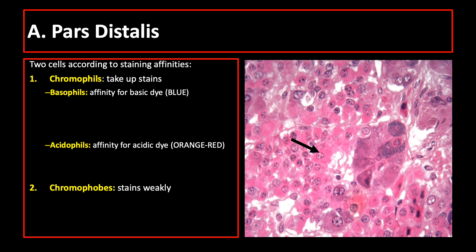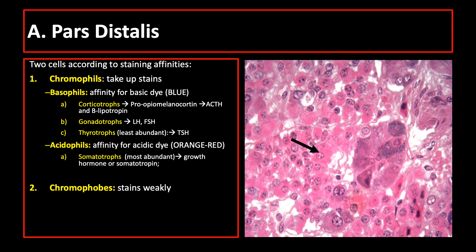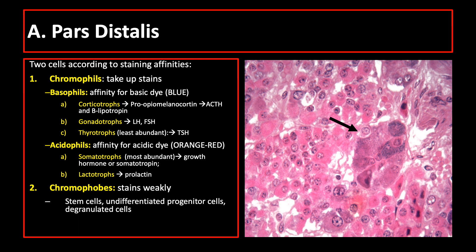Basophilic cells include corticotropes, which produce adrenocorticotropic hormone; gonadotropes, which produce luteinizing hormone and follicle-stimulating hormone; and thyrotropes, which are the least abundant and produce thyroid-stimulating hormone. Acidophilic cells include somatotropes, which are the most abundant and produce growth hormone, and lactotropes, which produce prolactin. Chromophobe cells include stem cells, differentiated progenitor cells, and degranulated cells.